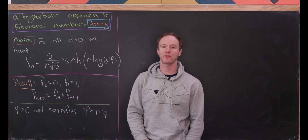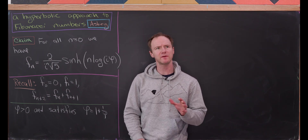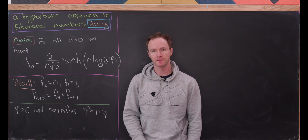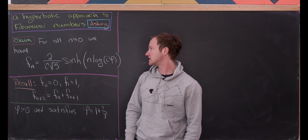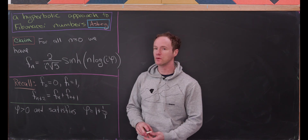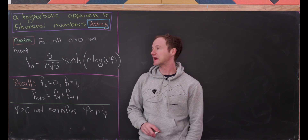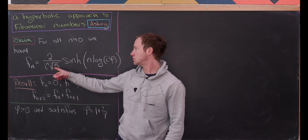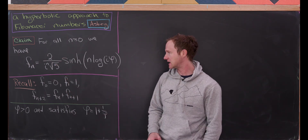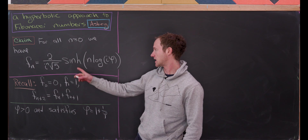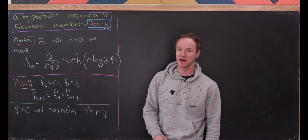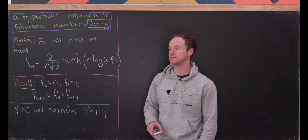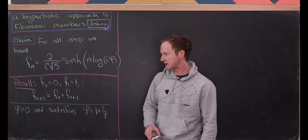Today I want to look at what I'll call a hyperbolic approach to maybe the most famous number sequence, the Fibonacci numbers. We will show that for all non-negative integers n, the nth Fibonacci number is equal to 2 over i to the n times the square root of 5, all times the hyperbolic sine evaluated at n times the log of i times phi, where phi is the golden ratio.